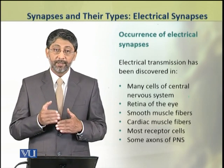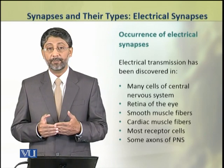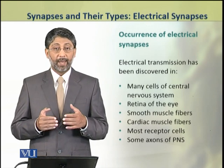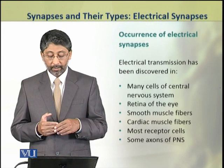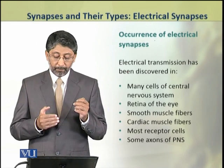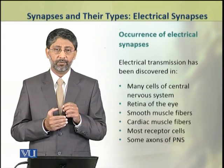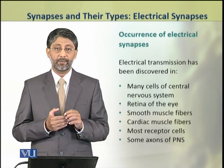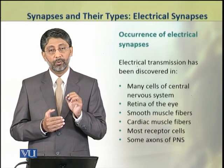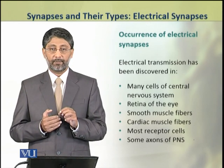Moreover, in many receptors like the retina of the eye, electrical synapses are present. Similarly, many smooth muscles, cardiac muscle fibers, many other receptor cells, and some neurons of the peripheral nervous system also contain electrical synapses, through which transmission of signals takes place rapidly.